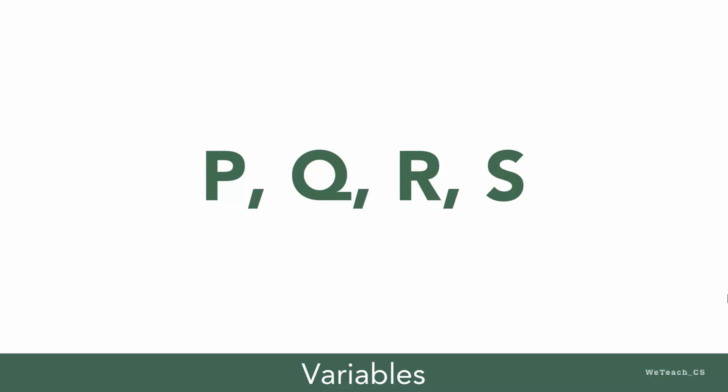The commonly used letters in discrete math for truth tables are P, Q, R, and S.